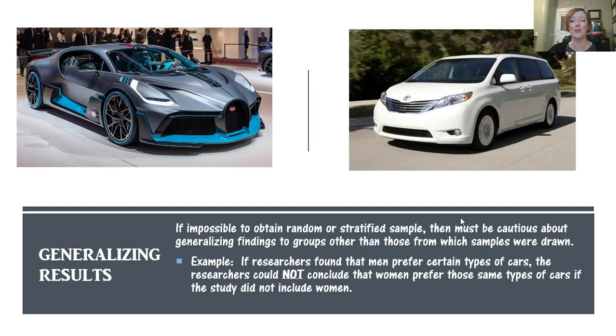For example, if researchers found that men prefer a certain type of car, the researchers could not conclude that women prefer the same type if they were not part of the study. This was hugely problematic in early research because many of the participants were recruited from the universities and colleges. A lot of the researchers were also professors at universities, and so students were very easily widely available to them.